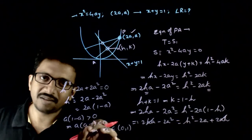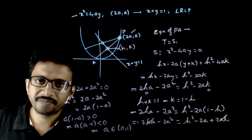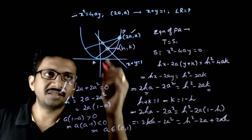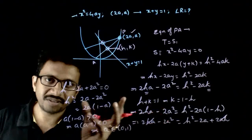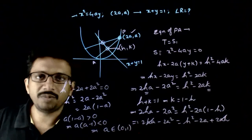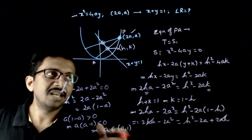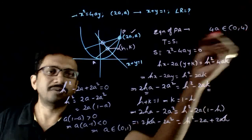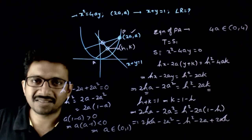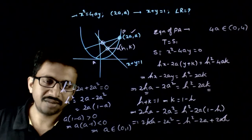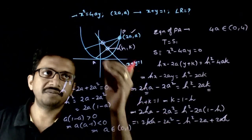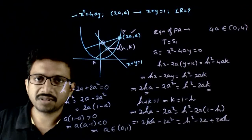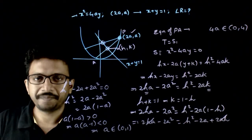Since a belongs to (0, 1), the latus rectum 4a must be in the interval (0, 4). So you can have any latus rectum between 0 and 4. If the latus rectum is more than 4, this condition will not be satisfied for two different values of h and k. You can now choose the correct option from the choices given. Thank you.